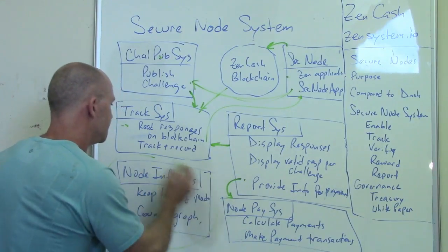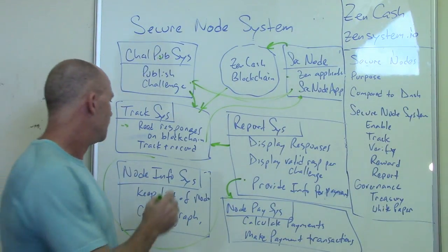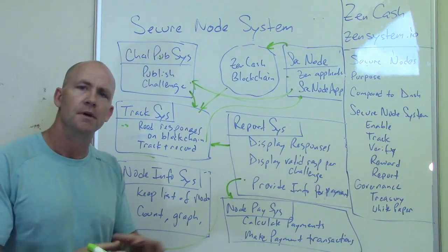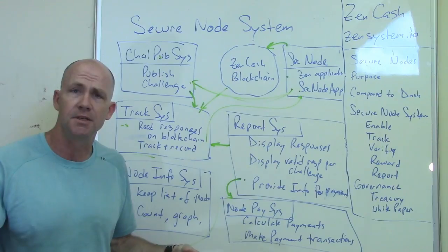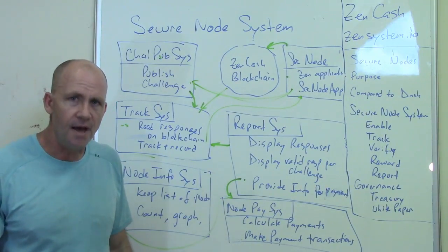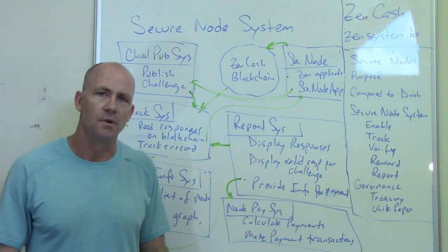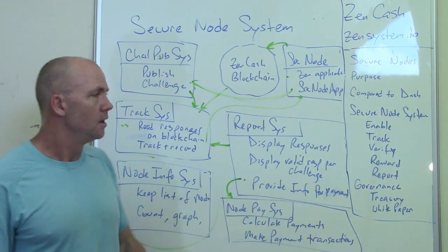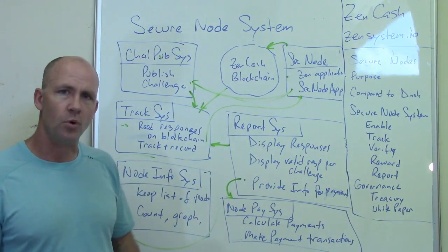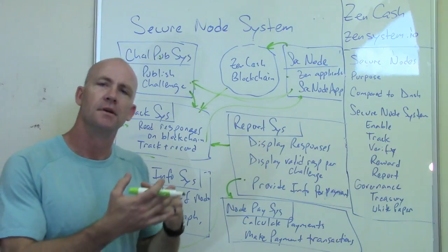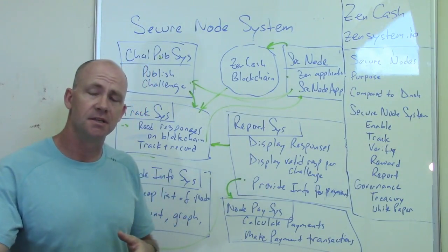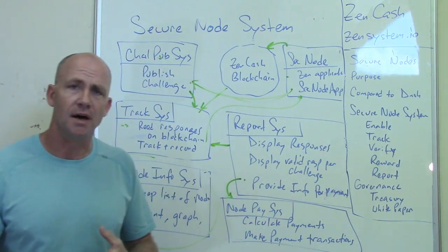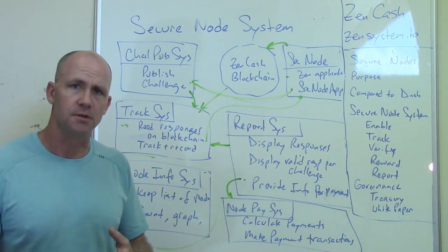We also need something that shows all the stuff that's going on. We're going to run the node information system to keep track of how many secure nodes there are out there, graph that over time, and do other things. People want a report of all the valid responses they've had, and we're also going to have a good block explorer so that we can explore all the different blocks.